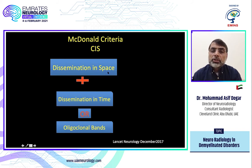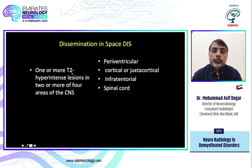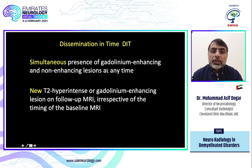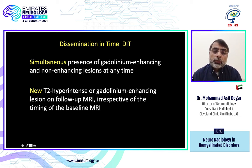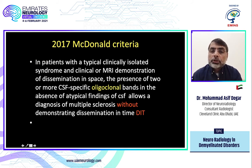For dissemination in space, there should be at least one or more lesions in one of four sites: periventricular, cortical/juxtacortical, infratentorial, or spinal cord. For dissemination in time: on a first scan, the presence of both enhancing and non-enhancing lesions fulfills the criteria; on follow-up, a new T2 hyperintense or new enhancing lesion also fulfills the criteria. New in McDonald 2017: if you don't have dissemination in time but have two or more oligoclonal bands in CSF, that also fulfills the MS criteria.